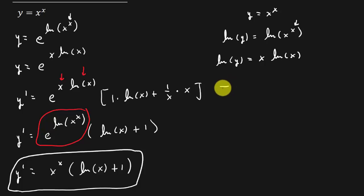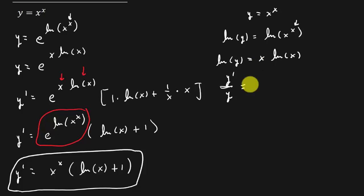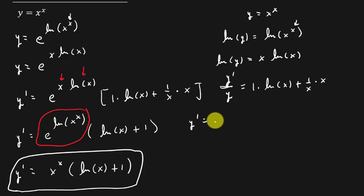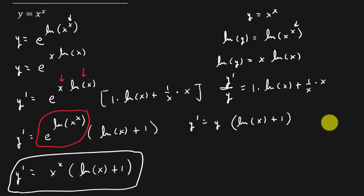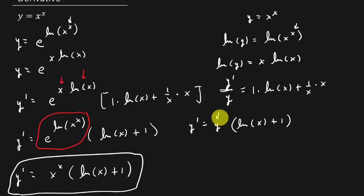When taking the derivative of natural log y, whatever you're taking the log of goes in the denominator and the derivative goes in the numerator — so that gives us y prime over y. On the right side, we apply the product rule: derivative of the first function times the second, plus the derivative of the second times the first. So we get y prime over y equals natural log x plus 1, which means y prime equals y times the quantity natural log x plus 1. Since y equals x raised to the x, y prime equals x raised to the x times the quantity natural log x plus 1.